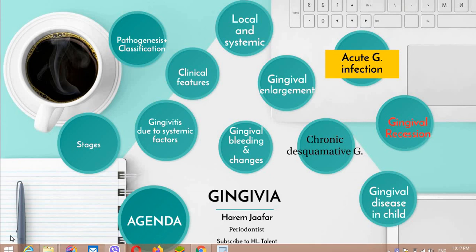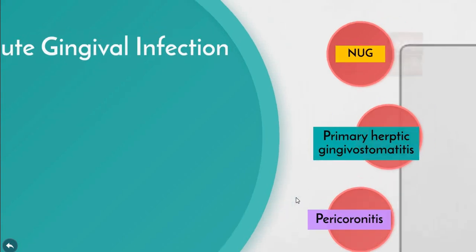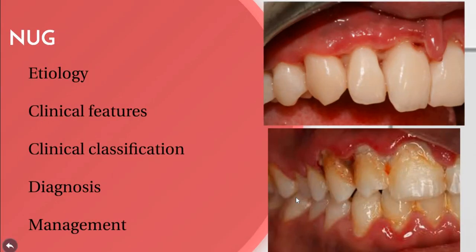Acute gingival infections are mainly composed of three categories: necrotizing ulcerative gingivitis, primary herpetic gingivostomatitis, and pericoronitis. I'll go through the clinical features, management, and diagnosis of each of them.